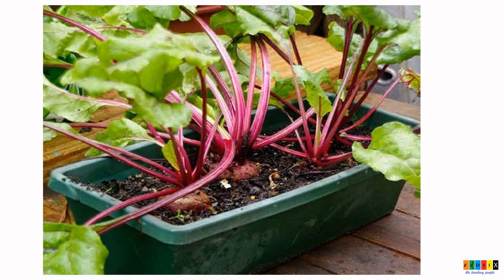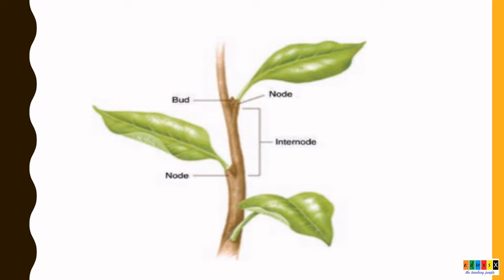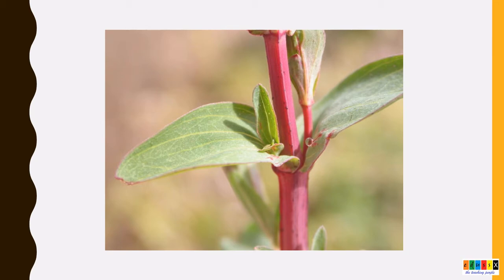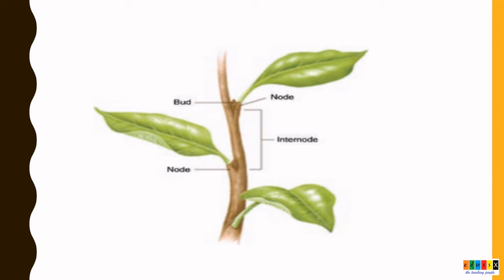Next, we are going to learn about the shoot system. Under the shoot system, first we are going to learn the different parts found in a stem. When we look into this picture, there are four important parts where we find nodes, internodes, and a bud. Stem grows above the soil and it grows towards the sunlight. It has nodes and internodes. Nodes are the parts where the leaf arises, and the part of a stem between two successive nodes is called the internode. The bud at the tip of the stem is called the terminal bud, and the bud at the axils of the leaf is called the axillary bud. This is a typical structure of a stem.